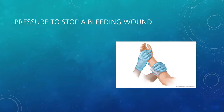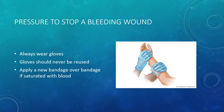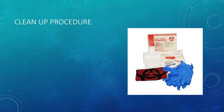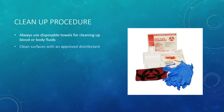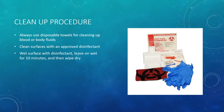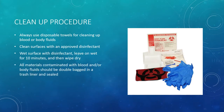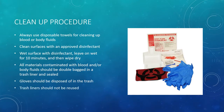To stop a bleeding wound, always wear gloves. Gloves should never be reused. Apply a new bandage over the bandage if saturated with blood. Always use disposable towels for cleaning up blood or body fluids. Clean surfaces with an approved disinfectant — wet the surface, leave on wet for 10 minutes, then wipe dry. All materials contaminated with blood or body fluids should be double bagged in a trash liner and sealed. Gloves should be disposed of in the trash, trash liners should not be reused, and trash should be discarded as soon as possible.